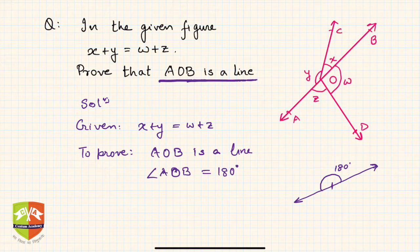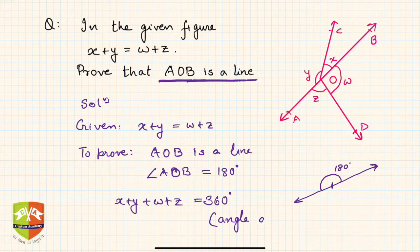Solution: You know that x plus y plus w plus z equals 360 degrees. Why is it? Because angle around a point...